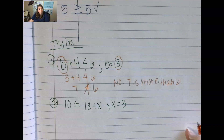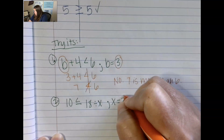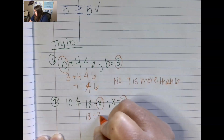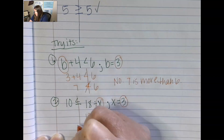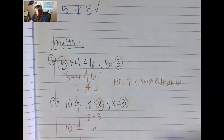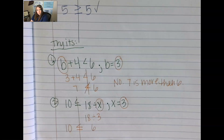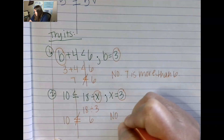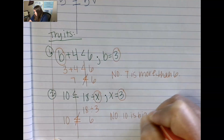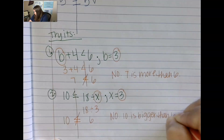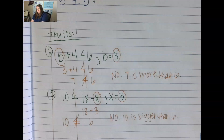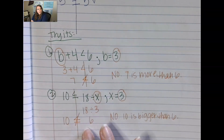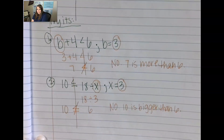Number 2 says 10 is less than or equal to 18 divided by x, and x equals 3. Substituting 3 in for x: 18 divided by 3 is 6. So we read: 10 is less than or equal to 6. 10 is definitely not less than 6, so this one is also no — it does not work. If the statement is true, it's a solution; if it's not true, it's not a solution.